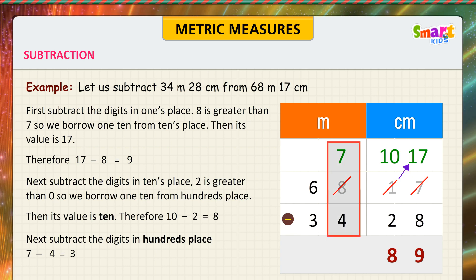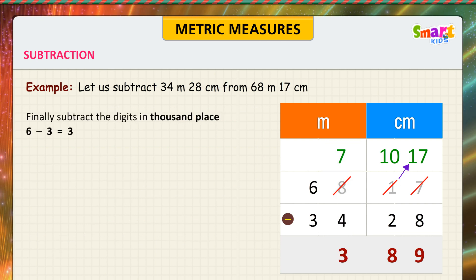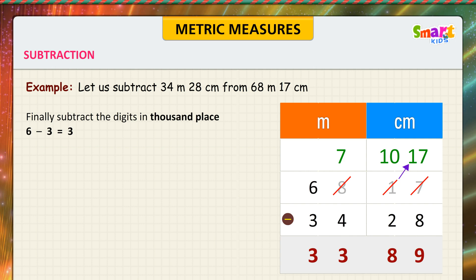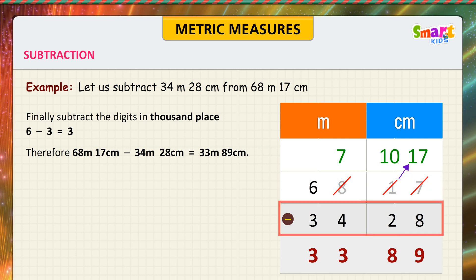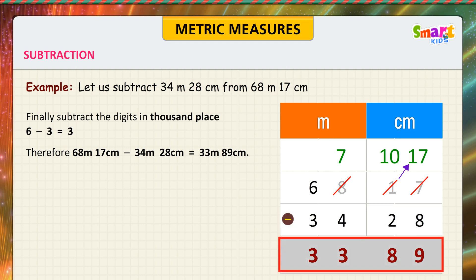Next, subtract the digits in the hundreds place: 7 minus 4 is equal to 3. Finally, subtract the digits in the thousands place: 6 minus 3 is equal to 3. Therefore, 68 meters 17 centimeters minus 34 meters 28 centimeters is equal to 33 meters 89 centimeters.